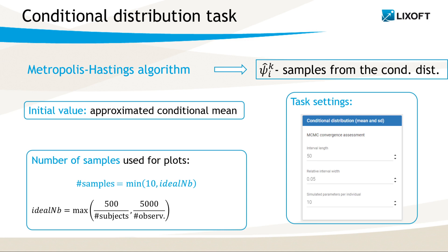This means that the maximum number of samples is 10, which is usually the case for small datasets. For large datasets, the number may be reduced, but the number of individuals times the number of simulated parameters should be at least 500, and the number of observations times the number of simulated parameters should be at least 5000. This ensures a sufficiently large but not unnecessarily large number of dots in the plots. The maximum number of 10 can be changed in the settings together with other parameters of the procedure.